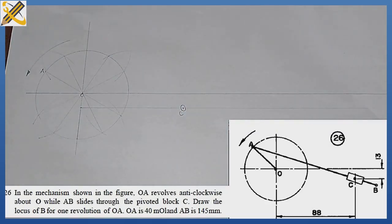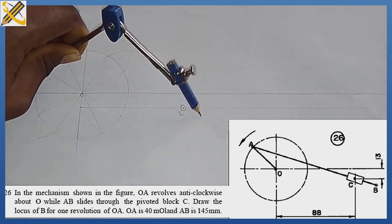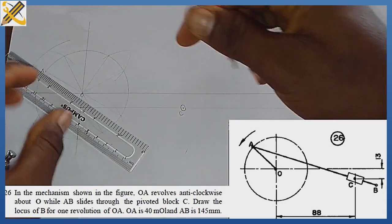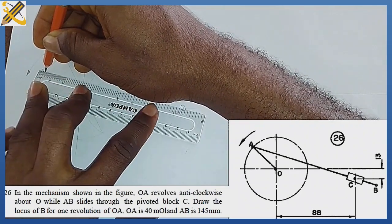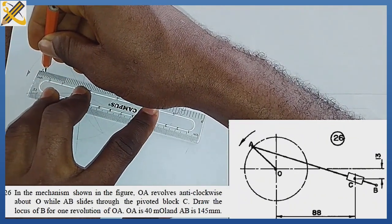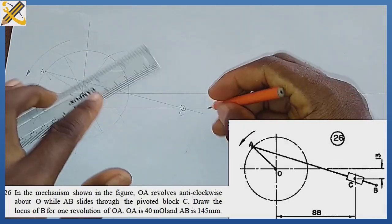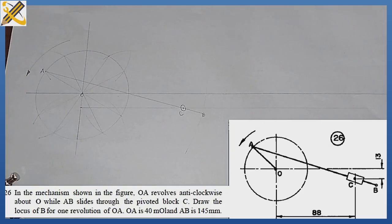We are told that length AB is 145 mm. With your compass set to 145 mm, place it on point A and strike an arc at the bottom. From point A, align your ruler passing through point C — because the rod AB slides through point C — and draw through to where the line touches that arc. That intersection is our initial point B.